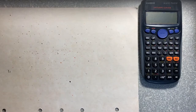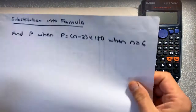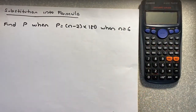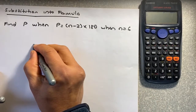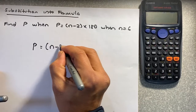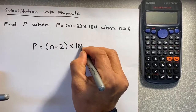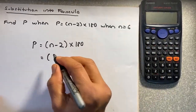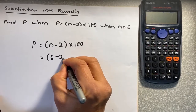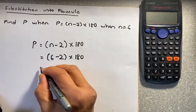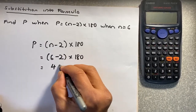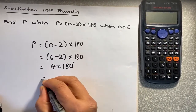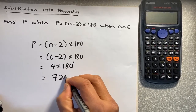Another example: this is to find the sum of angles in a polygon. The formula is: angle sum equals (n minus 2) times 180. So the formula is P equals (n minus 2) times 180. Suppose you know that n, the number of sides, is 6. You're going to substitute that number into the equation. So instead of n, you put 6 minus 2 times 180. That means 6 minus 2 in a bracket is 4 times 180. Put it in your calculator and it's going to be 720 degrees.